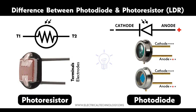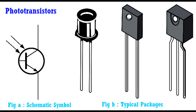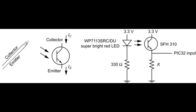Planar phototransistors are designed with a flat, planar structure where the light-sensitive region is spread out over a flat surface, providing a large area for light collection and improving sensitivity. Used in applications where uniform light detection over a large area is required, such as image sensors and flat panel displays. Plastic encapsulated phototransistors are encapsulated in a plastic package with a transparent window or lens, providing durability while allowing light to reach the sensitive region. Commonly used in consumer electronics, industrial sensors, and environmental monitoring devices.